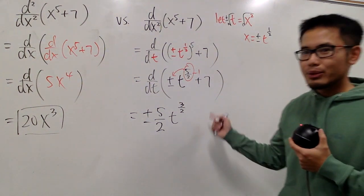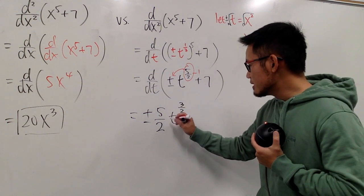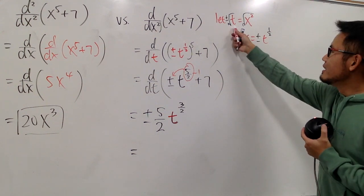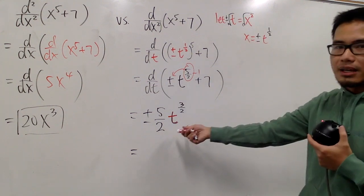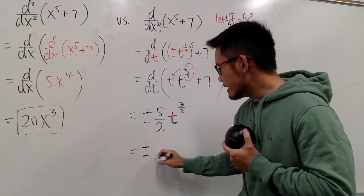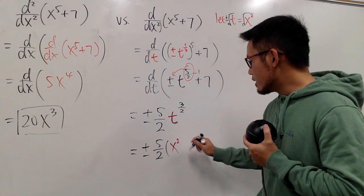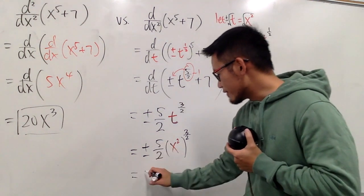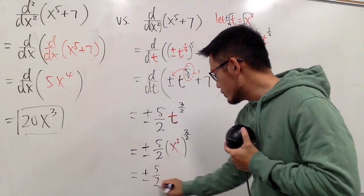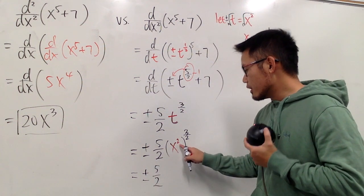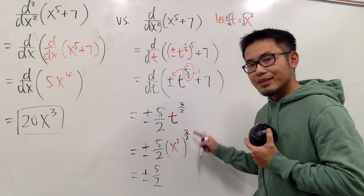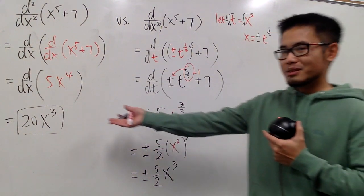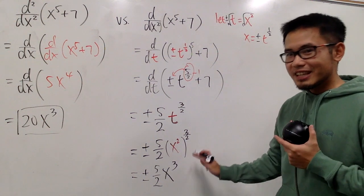No, because we have to get back to the x world. This right here is t. So what can we do? Originally, look at the red part. t is equal to x squared, so I just have to plug it back. So here we have plus minus 5 over 2, t is the x squared, and then you raise that to the 3 over 2 power. At the end, you see that we still have the plus minus, we have the 5 over 2, and then of course x to the 2nd power raised to the 3 half power, 2 times 3 half, the 2's cancel out, so we just have x to the 3rd power. It's kind of similar in terms of the power, but this is how you're supposed to do this.